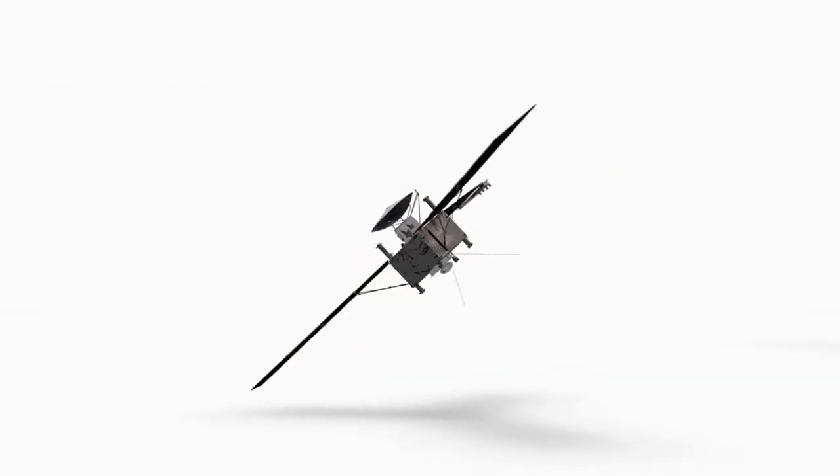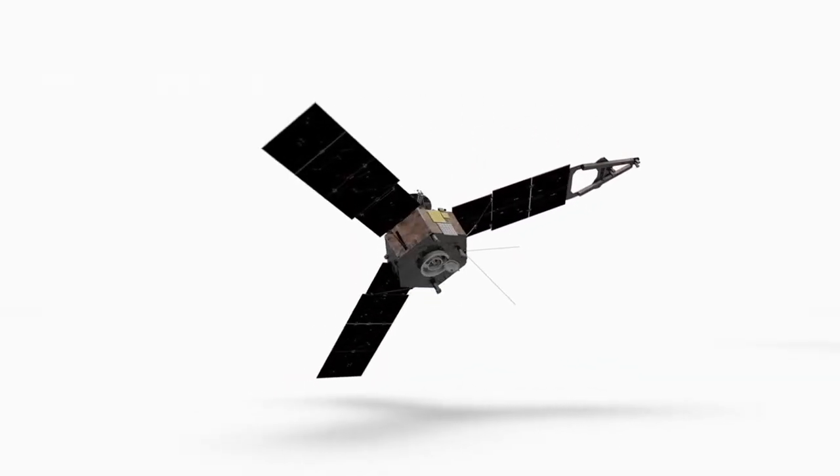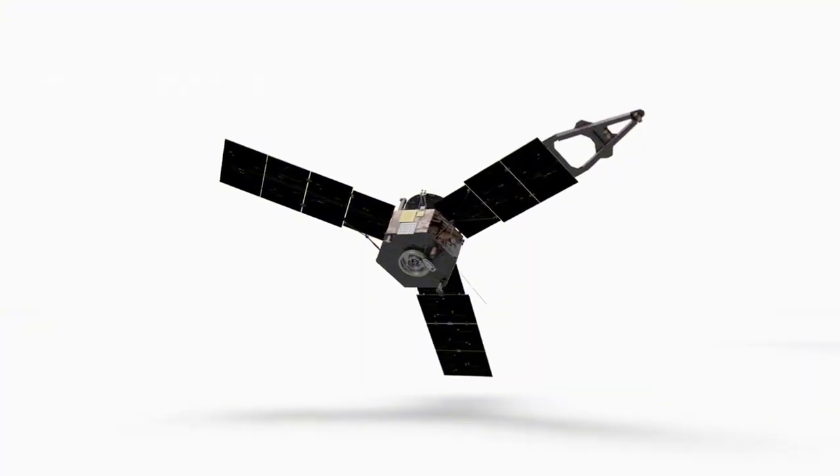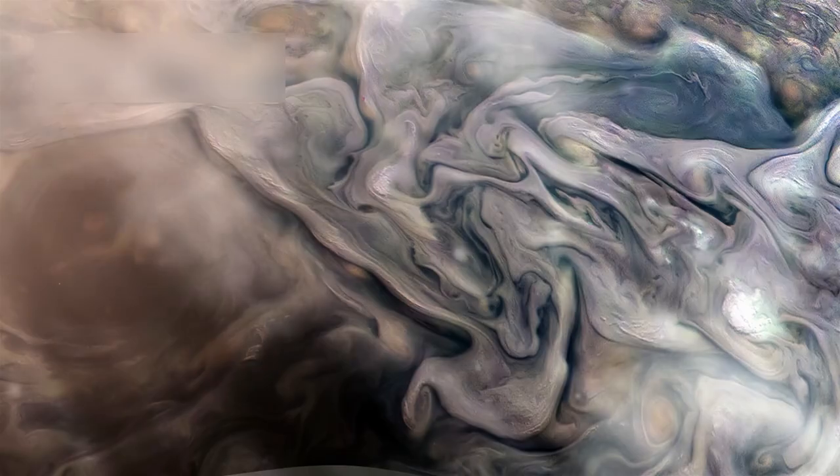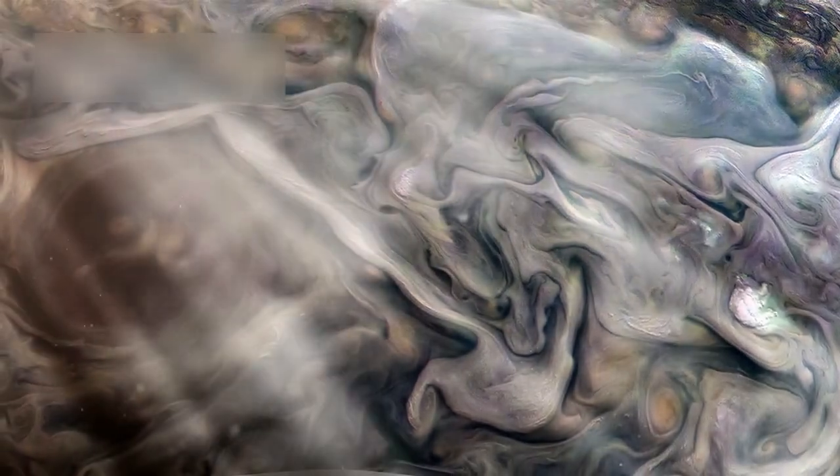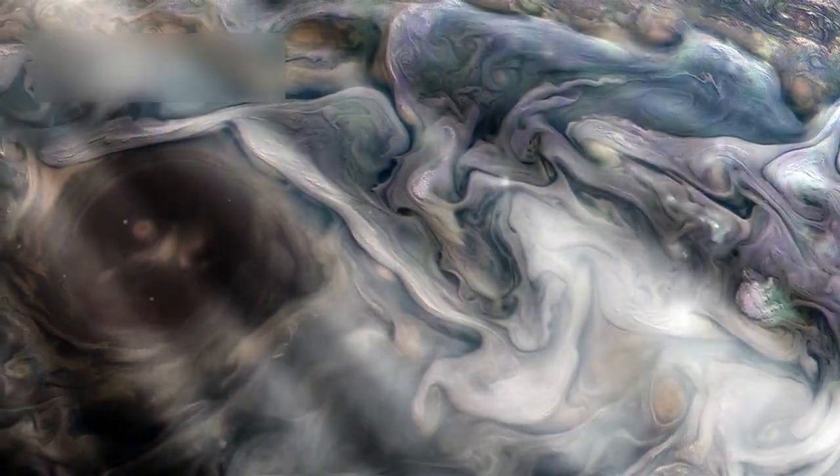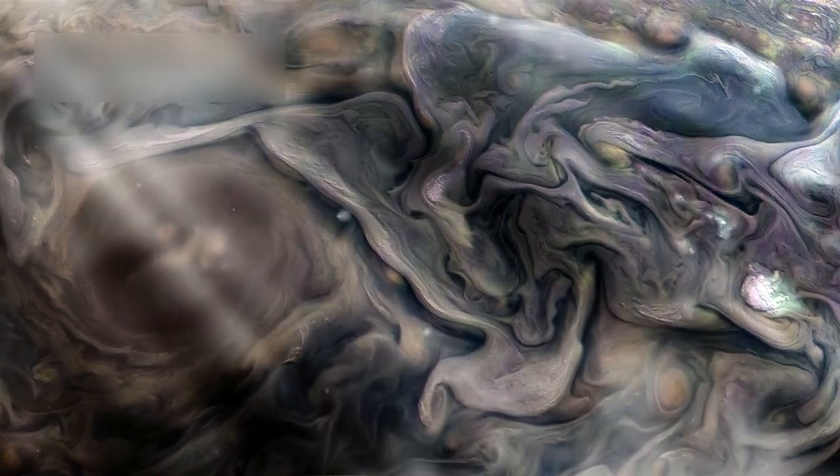Voyager 1's first mission focused on exploring Jupiter and Saturn, two giant planets filled with mystery during the 1970s. When it reached Jupiter, the spacecraft captured incredible photos of swirling storms larger than Earth itself.